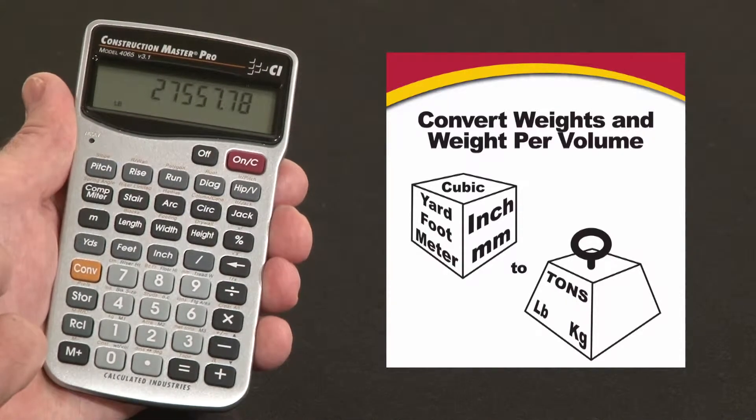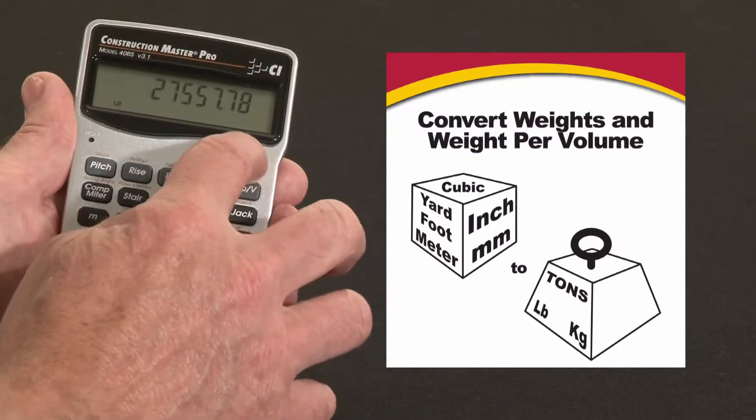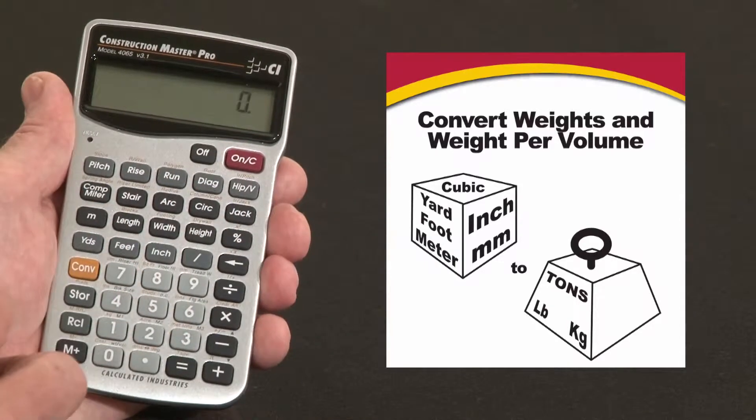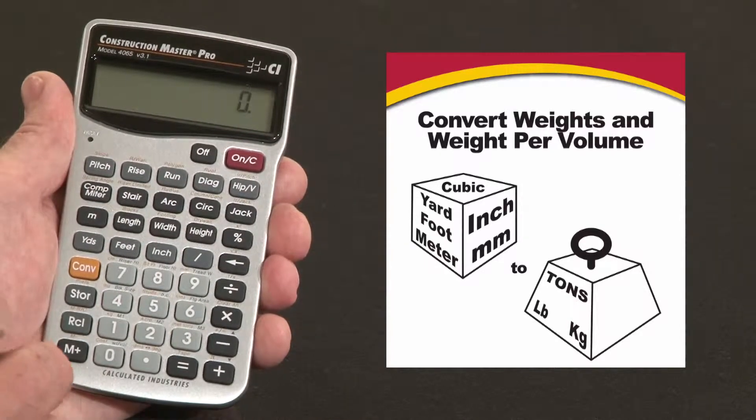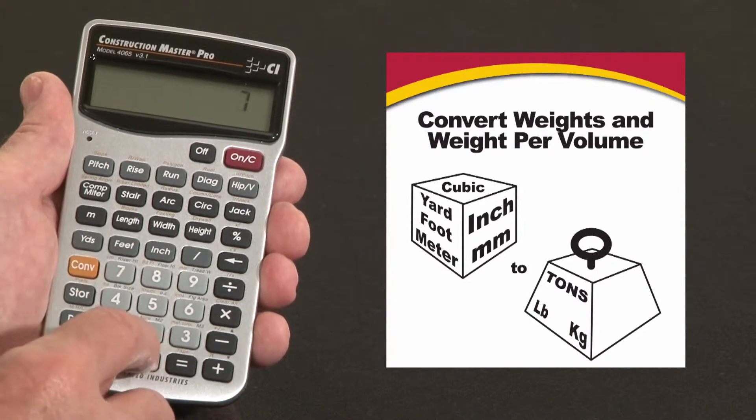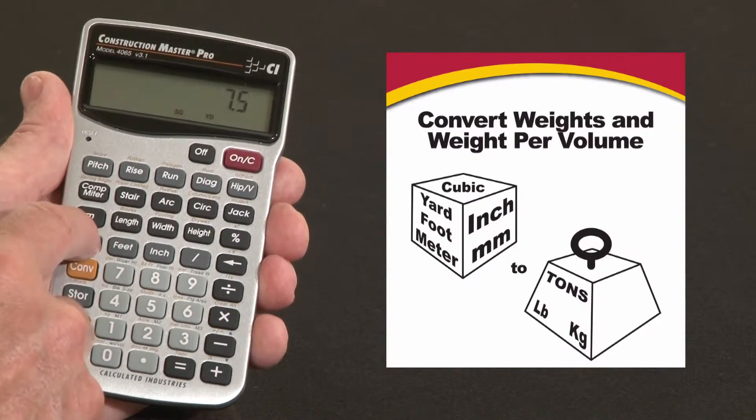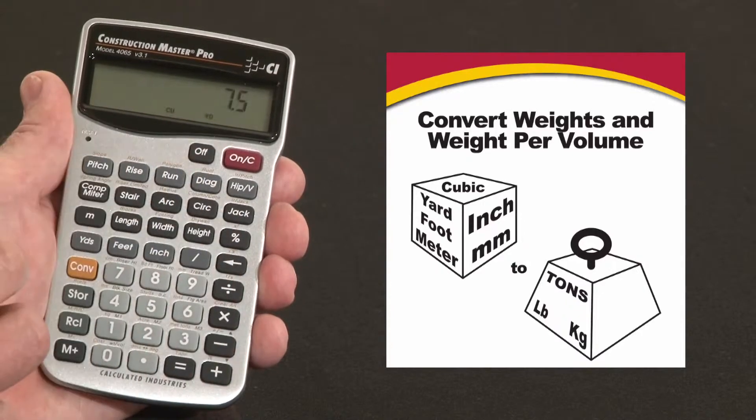You can also convert weights per volume. So say you've calculated or you know a certain volume, you've calculated that you need seven point five cubic yards of sand, let's say. Seven point five yards once, yards twice, three times makes it cubic yards.